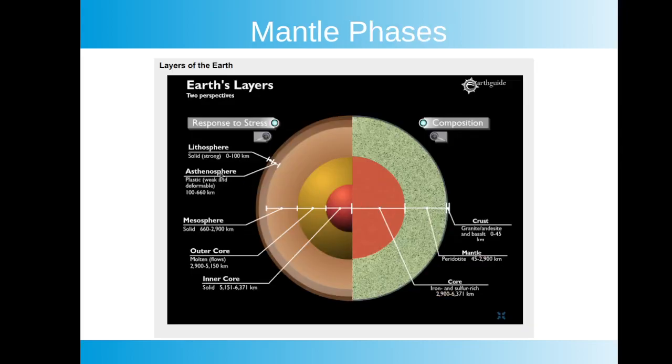As we look at this diagram in an enhanced view, which is on Blackboard for my students, the lithosphere is listed as being a solid and a strong solid. It's a very rigid solid that if you try to put pressure on it, it's going to break. The mesosphere is just listed as solid, and the asthenosphere is listed as plastic, weak, and deformable.